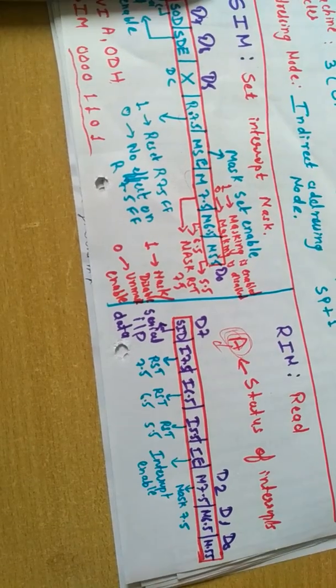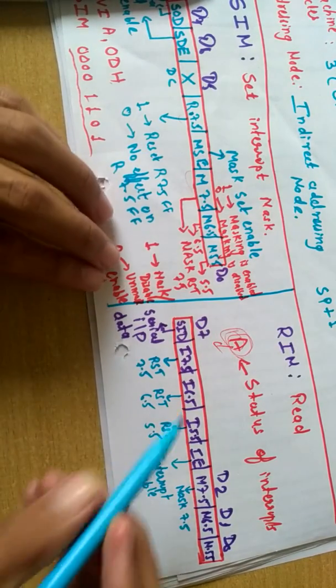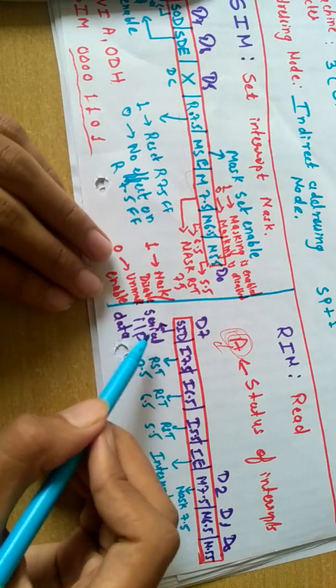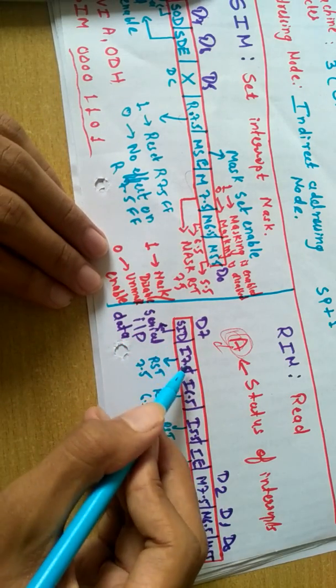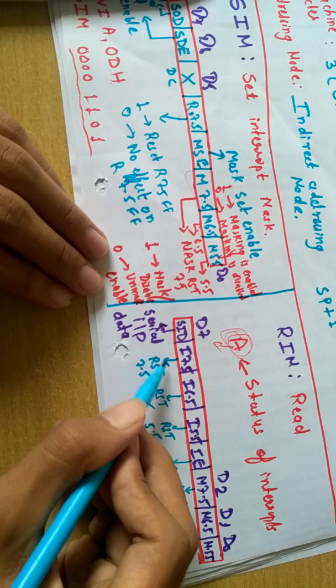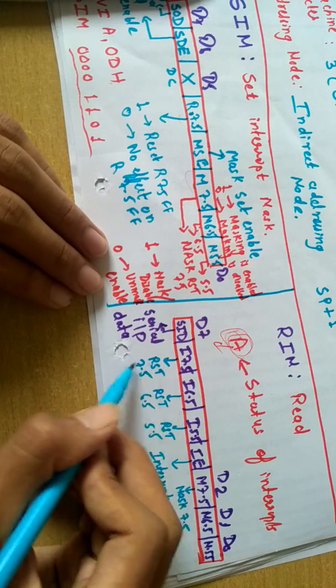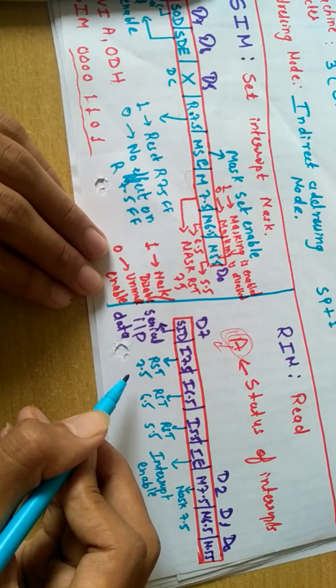So let me give the description of all these bits. This is the description. This pin is used for serial input data, taking input data serially. This is I7.5, means this is the status of the interrupt 7, RST 7.5.